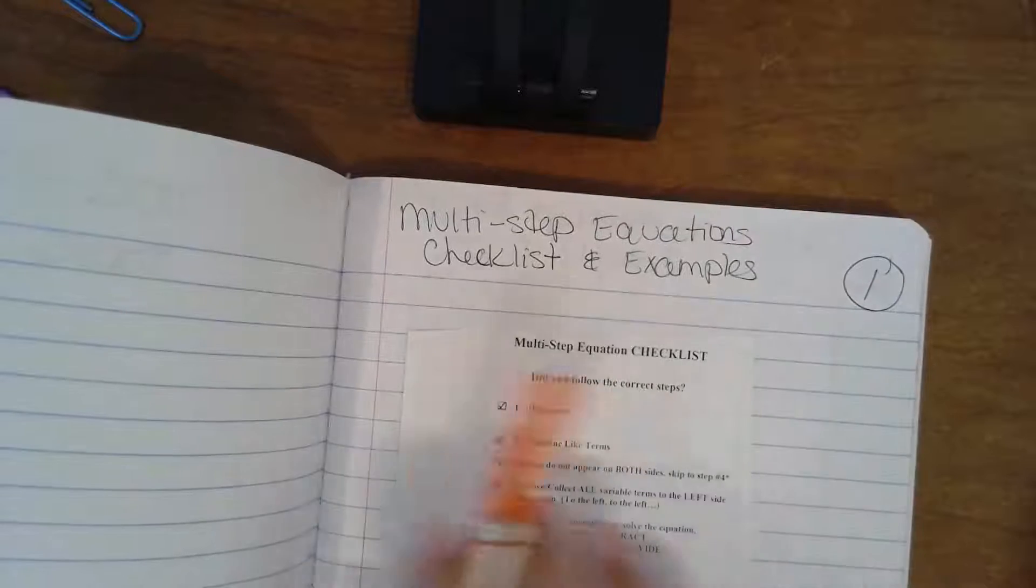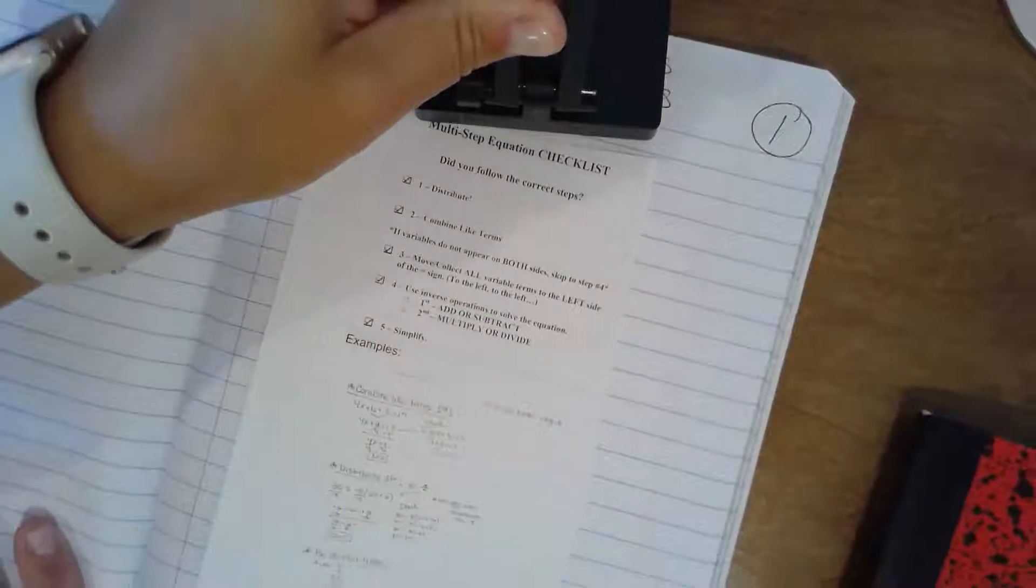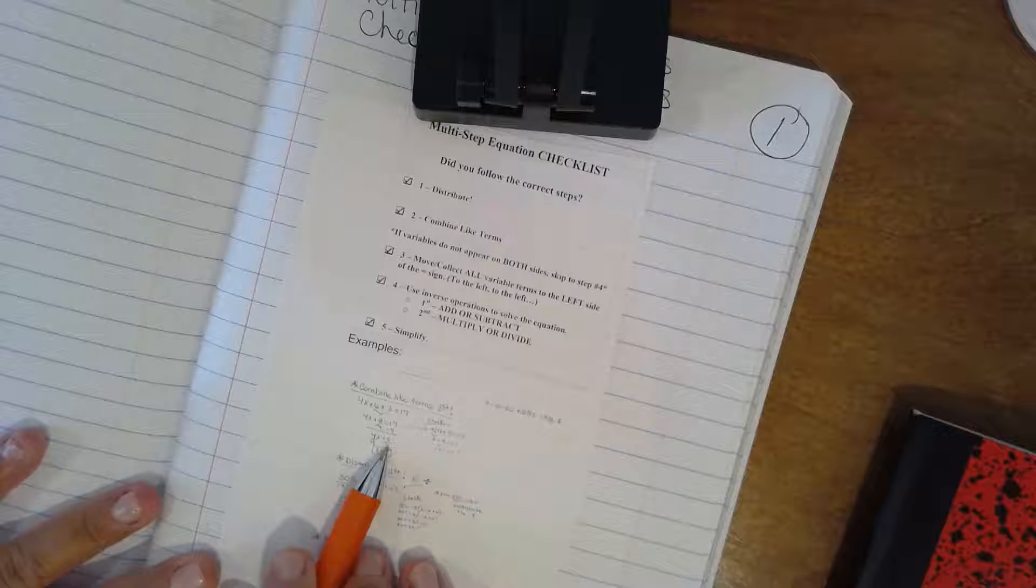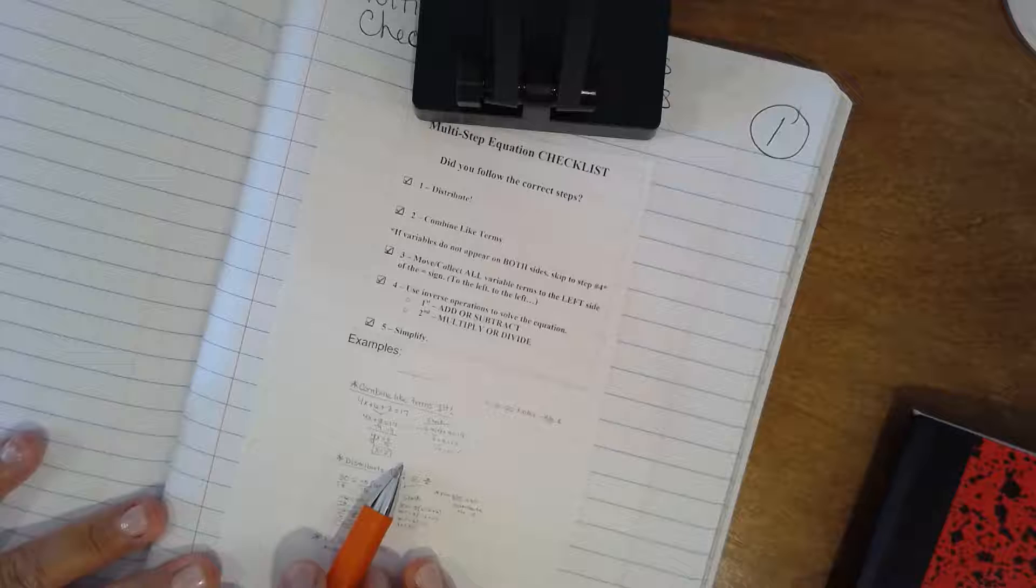So for example, page one, it was multi-step equations, the checklist, and the examples, right? So if you look, all of your notes should be on this page. And just a reminder, you should not have my notes, you should have your own notes, okay? The virtual notebook, my copy online is really just to guide you.